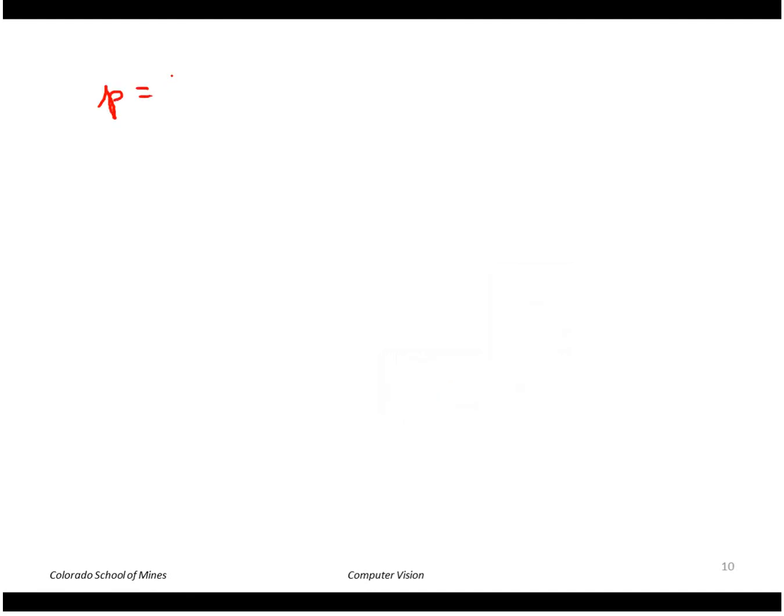So I want the extrinsic parameter matrix, which is the first three rows of the world to camera transform. I'll indicate that using MATLAB notation, namely that I want rows one through three and all the columns here. So if I can find the H matrix from world to camera, I can do this.